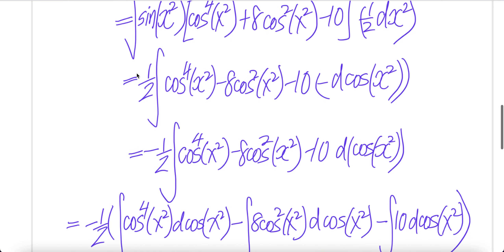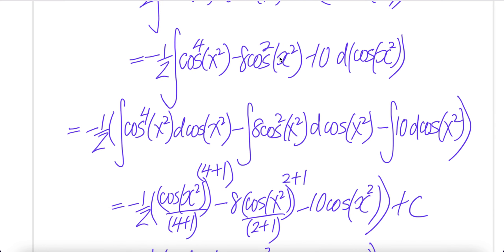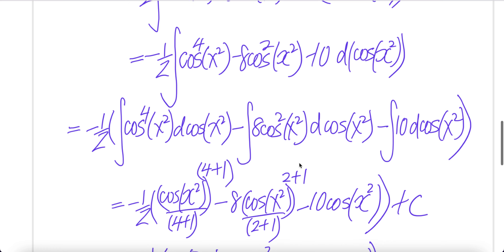Minus one out, multiply with half, you get negative half. Everything here is the same. Now integral difference is difference of integral. Each one of these get its own integral.